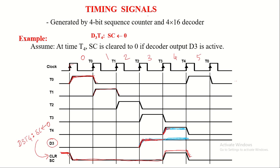In this timing diagram, the clear input of the sequence counter is active at the beginning of the clock cycle. So in the next clock cycle, T0 is generated. In the subsequent clock cycle, the clear input is on the falling edge — meaning it is not active — so the sequence counter performs only the increment operation. In the 0th clock cycle T0 is active, in the 1st clock cycle T1 is active, in the 2nd clock cycle T2 is active, and this continues up to T15 unless the clear input is set again.